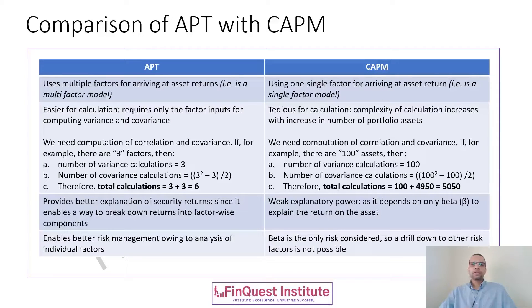Now would be a good time to explore the difference between APT and CAPM. We have understood the CAPM model in our previous video, so let's try to contrast these two techniques. In APT, we use multiple factors for arriving at asset returns — that is, we can have a multi-factor model.